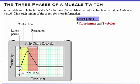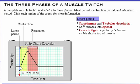During the latent period, the sarcolemma and T-tubules depolarize. Calcium ions are released into the cytosol and the cross bridges begin to cycle, but the number of these cycling cross bridges is not sufficient to bring about a visible shortening of the muscle. This phase usually lasts less than five milliseconds.